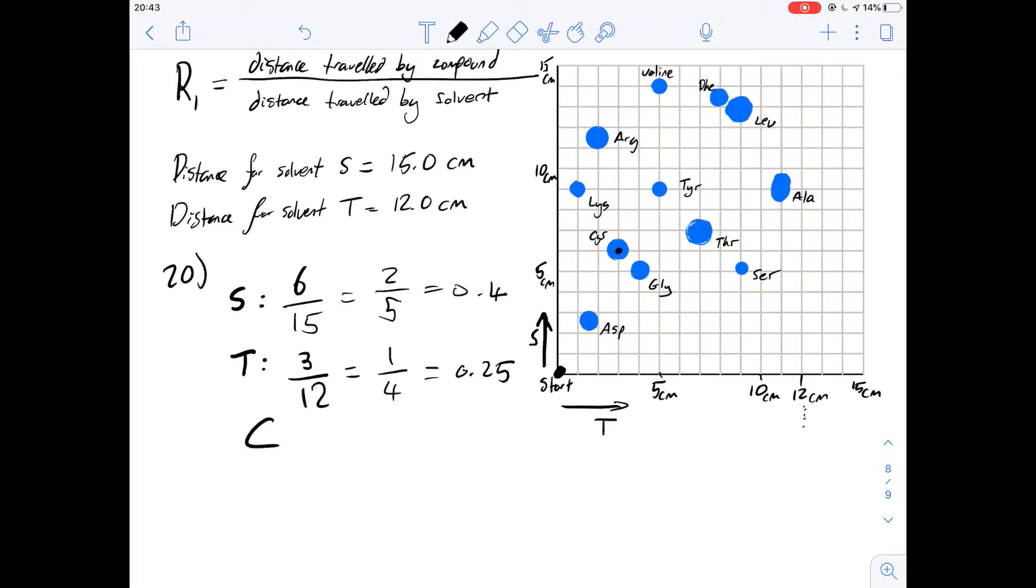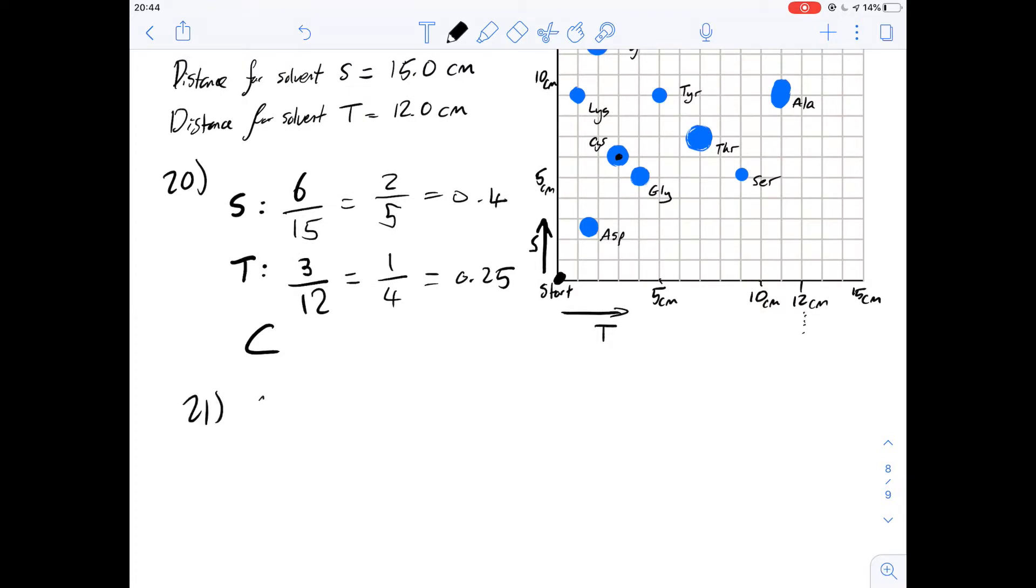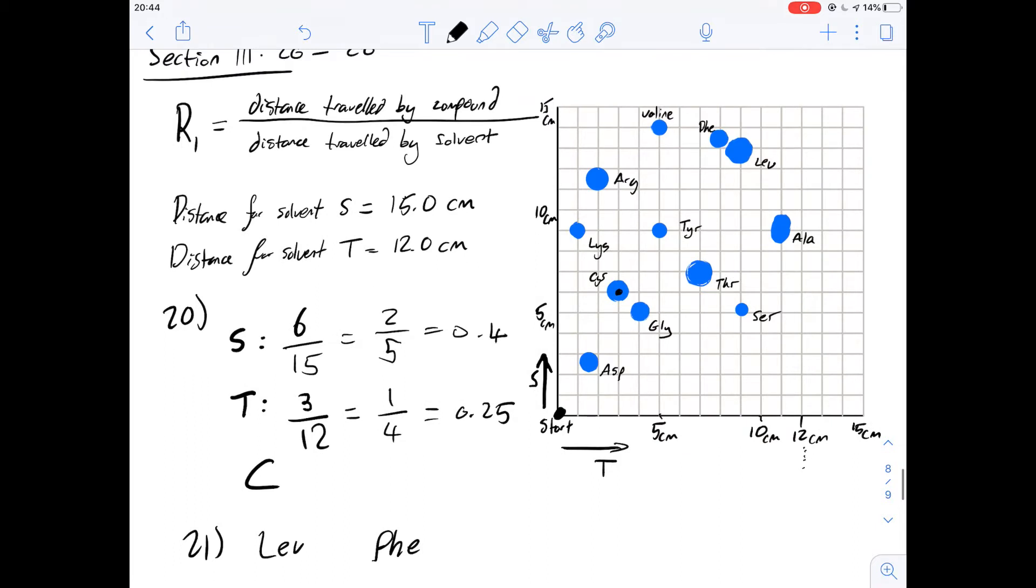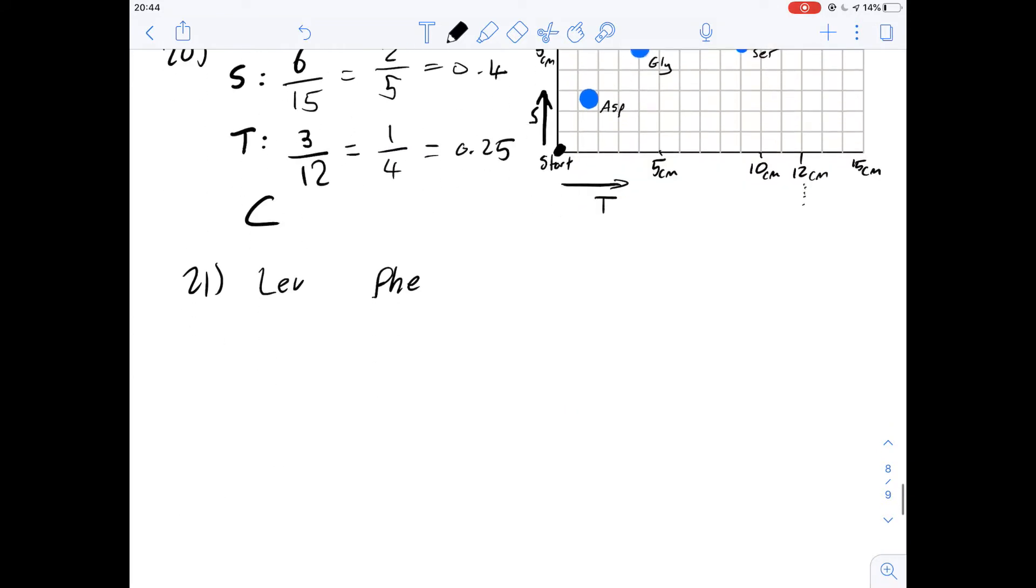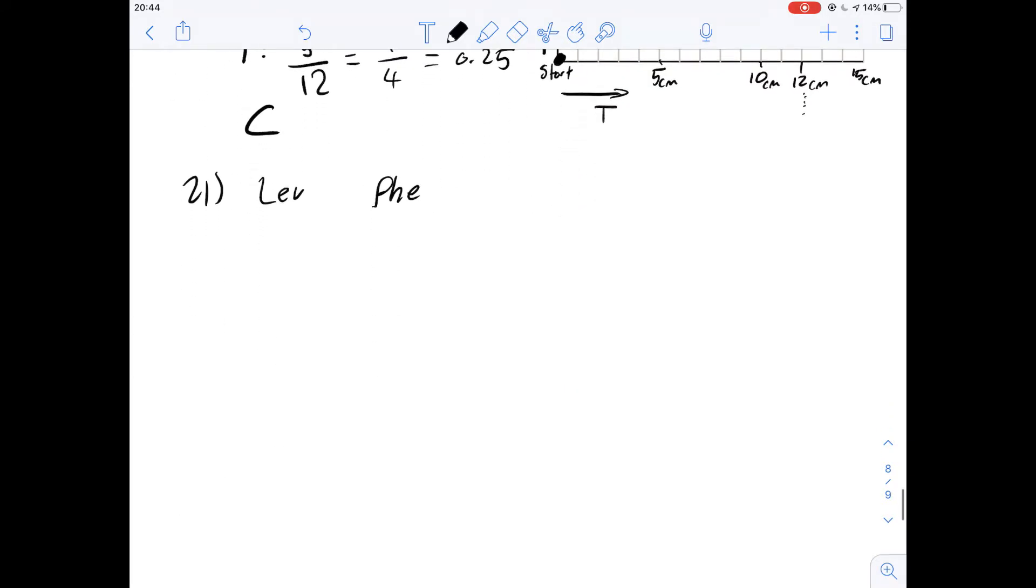21 says in figure 1 the highest R1 value for the following amino acids is what? So we're looking at leucine and phenylalanine. Leucine I've simplified to LEU and phenylalanine is PHE. So we can see that they are here. Leucine and phenylalanine here. So we just need to work out the R1 for each of these and each of the solvents.